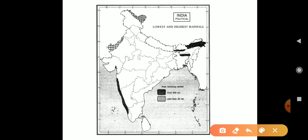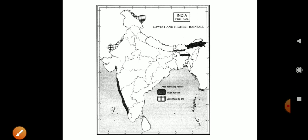For 400 centimeters rainfall areas — the Western coast of peninsular India, the Western Ghats, and the southwest mountain region receive very heavy rainfall.